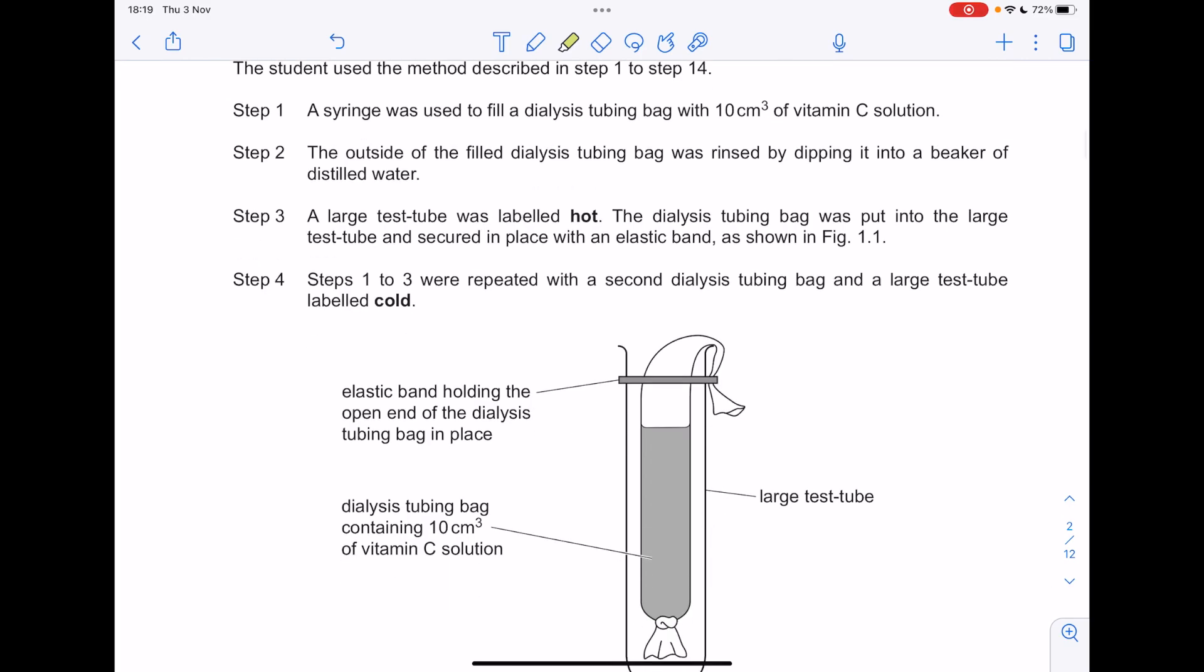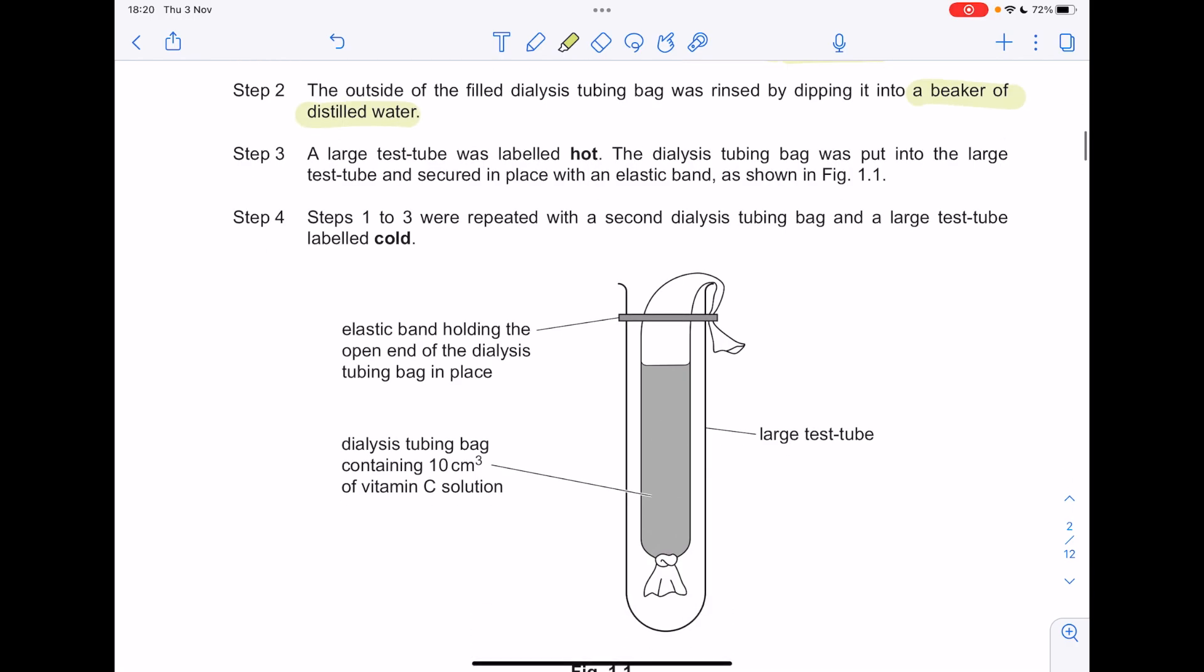A syringe was used to fill a dialysis tubing bag with 10 centimeters cubed of vitamin C solution. The outside of the filled dialysis tubing bag was rinsed by dipping it into a beaker of distilled water. A large test tube was labeled hot. The dialysis tubing bag was put into the large test tube and secured in place with an elastic band.